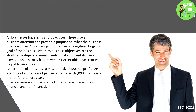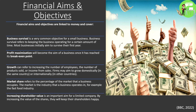Business aims and objectives fall into two main categories: financial and non-financial. Financial aims and objectives are linked to money and cover the following areas.